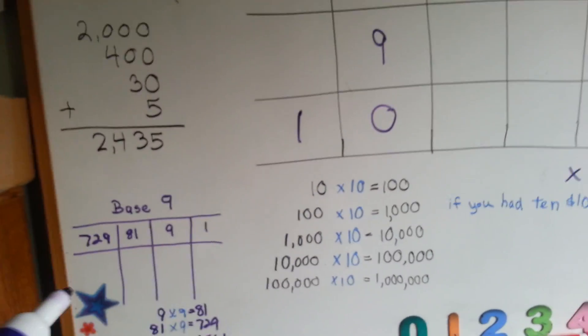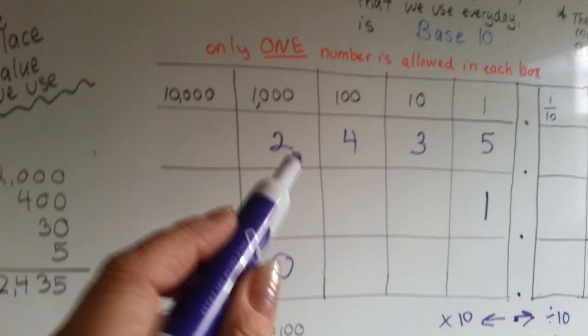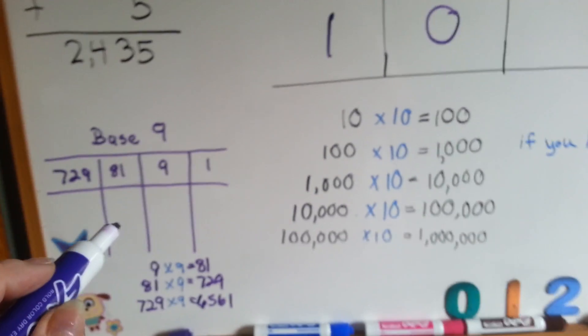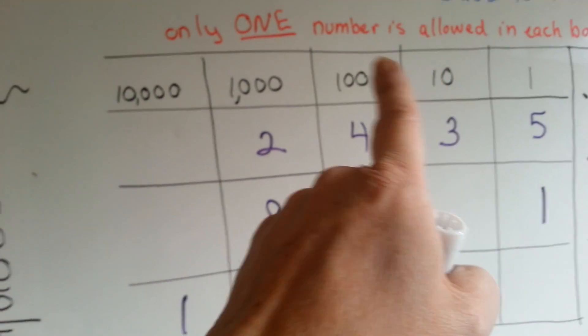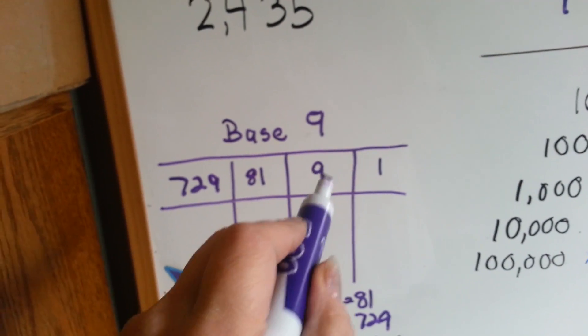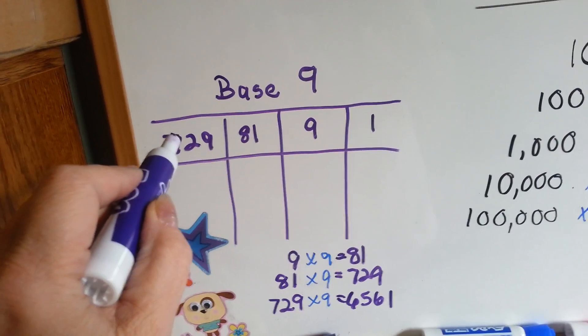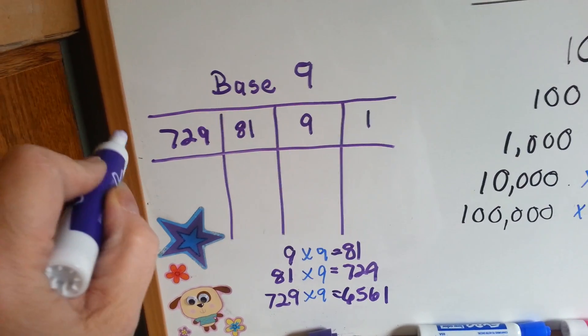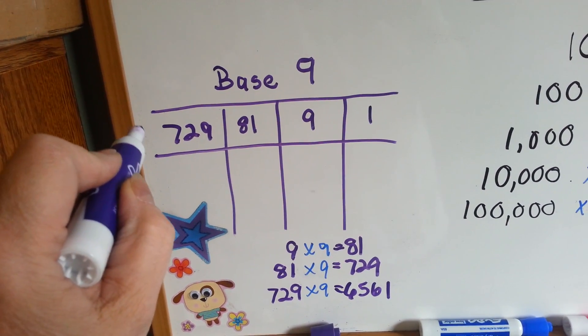Now, let's look at this base nine, so that you can understand the difference between base ten and another base. In base ten, we say ones, tens, hundreds, thousands. In base nine, we say one, nine, eighty-one, seven hundred and twenty-nine. And the next number over to the left would be six thousand five hundred and sixty-one. Now, why is that?